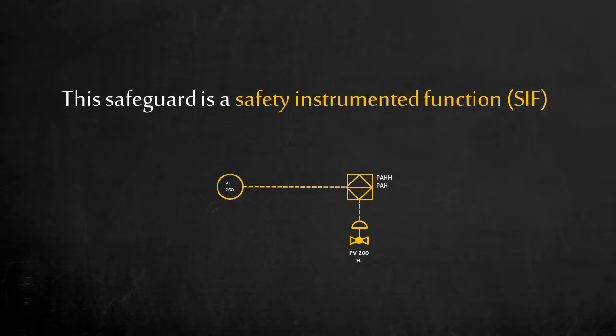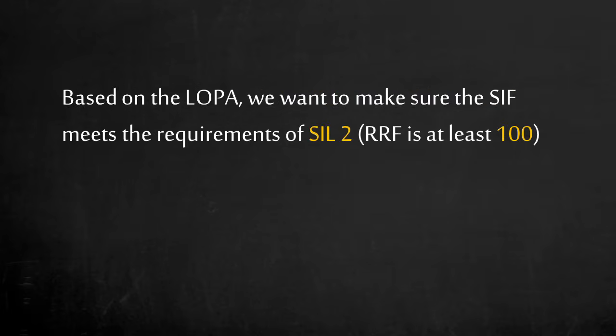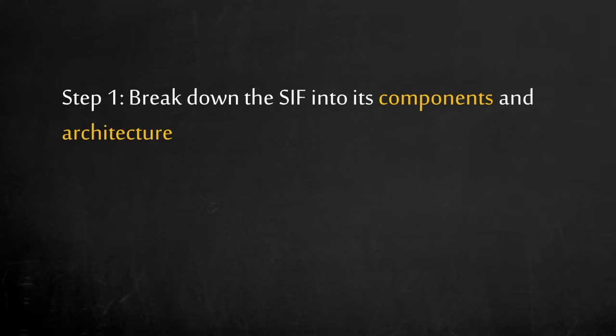The high pressure shutdown is a safety instrumented function, which consists of a sensor, a logic controller, and the final element. Based on the LOPA, we want to make sure the safety instrumented function meets the requirements of SIL2, which reduces the risk by 100 times. Let's break down the SIL study into five steps. Step 1. Break down the safety instrumented function into its components and architecture. Let's take a look.